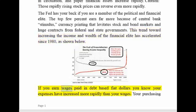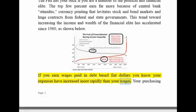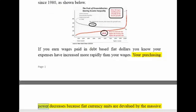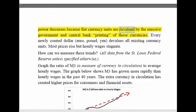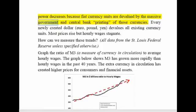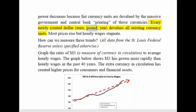If you earn wages paid in debt-based fiat dollars, you know your expenses have increased more rapidly than your wages. Your purchasing power decreases because fiat currency units are devalued by the massive government and central bank printing of those currencies. Every newly created dollar, euro, pound, or yen devalues all existing currency units.